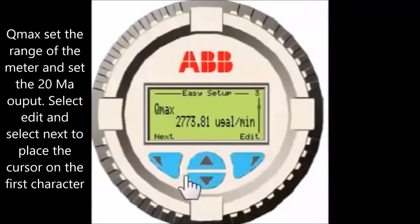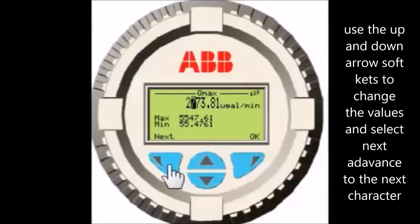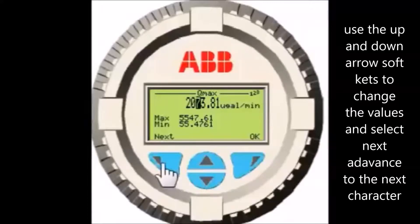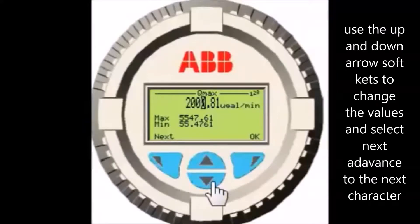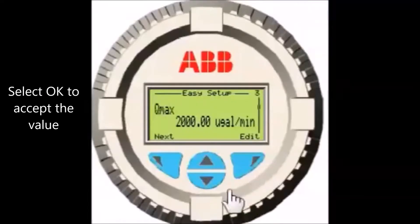Q max sets the range of the unit. This corresponds to the current output at 20 milliamp and also sets the range of all internal diagnostic messages and warnings. Select Edit — the current setting is displayed, and the maximum and minimum range for the flow tube is shown below; these cannot be exceeded. Select Next to place the cursor over the first character to be changed and use the up and down arrow soft keys to change the value. Repeat for all characters and select OK to accept the value.